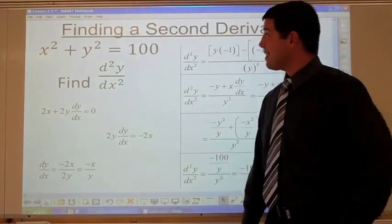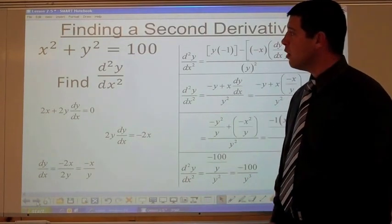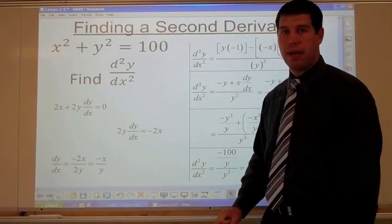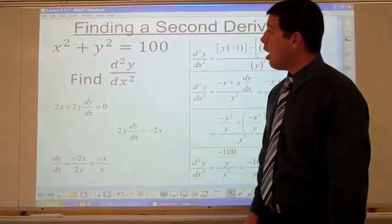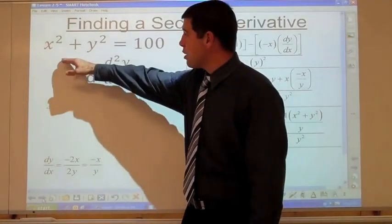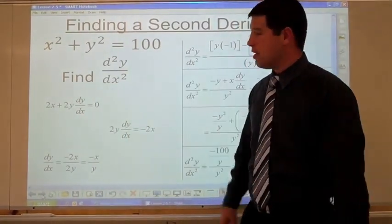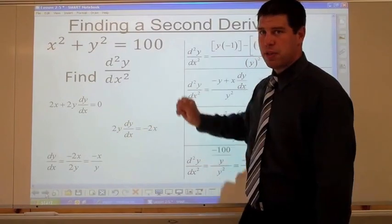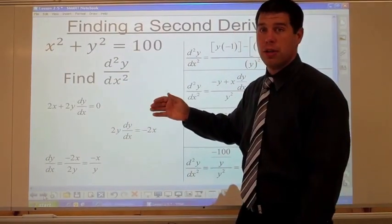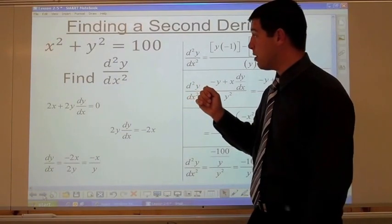The last example is finding a second derivative — a common question on multiple choice tests and a textbook favorite for implicit differentiation. The equation is a circle: x squared plus y squared equals 100. You may remember from algebra 2 and precalculus that x squared plus y squared equals r squared is the equation for a circle centered at the origin, with radius 10 here.